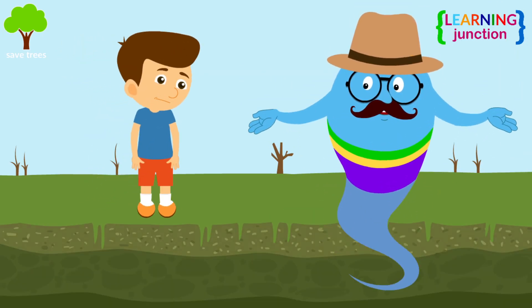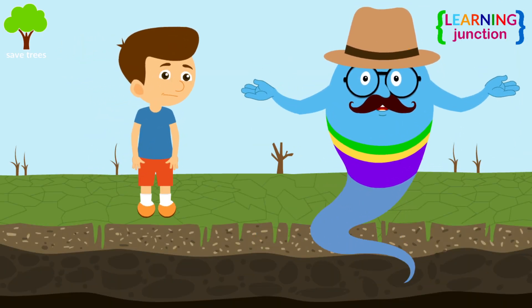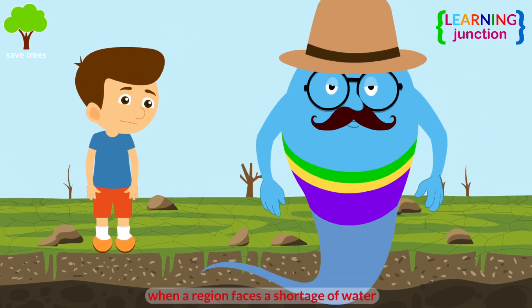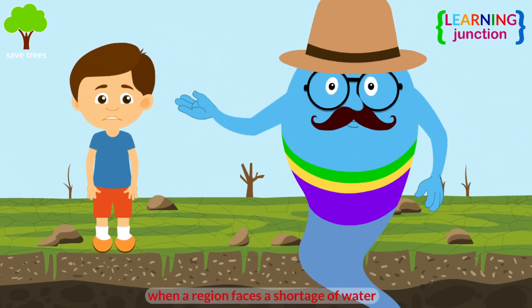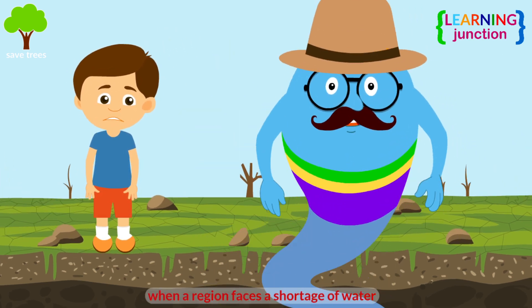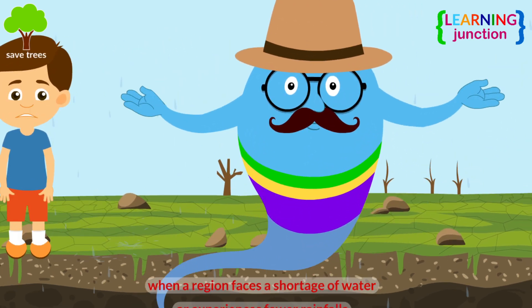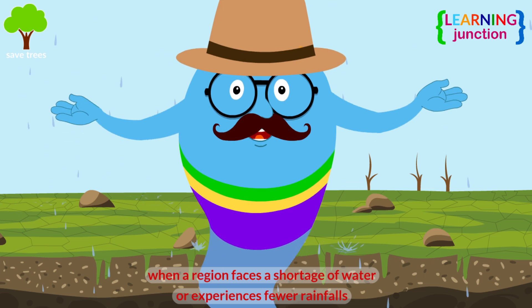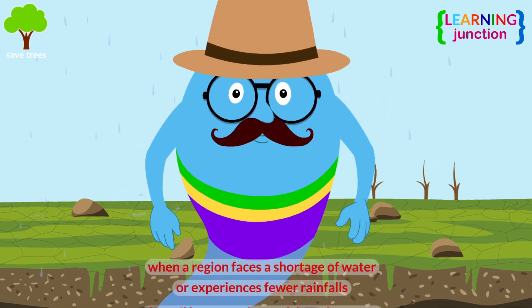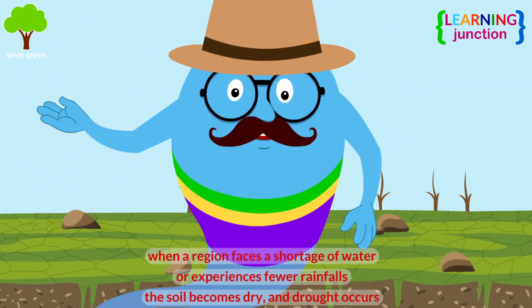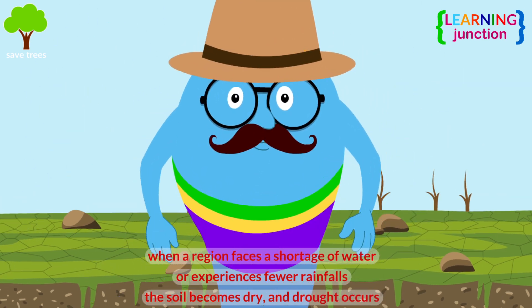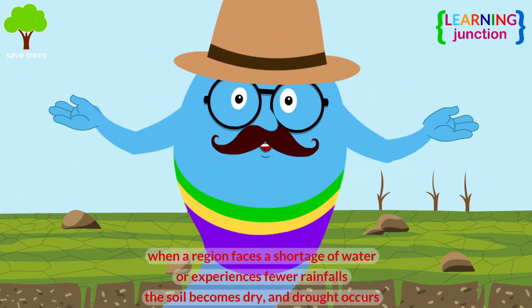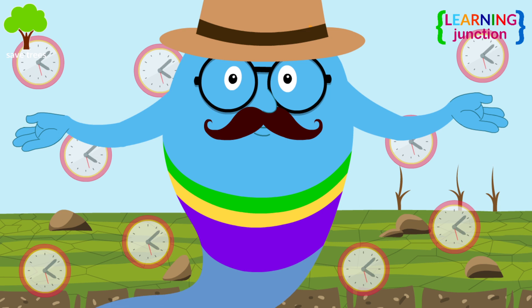See? This soil looks very dry. When a region faces a shortage of water or experiences fewer rainfalls, the soil becomes dry and drought occurs.